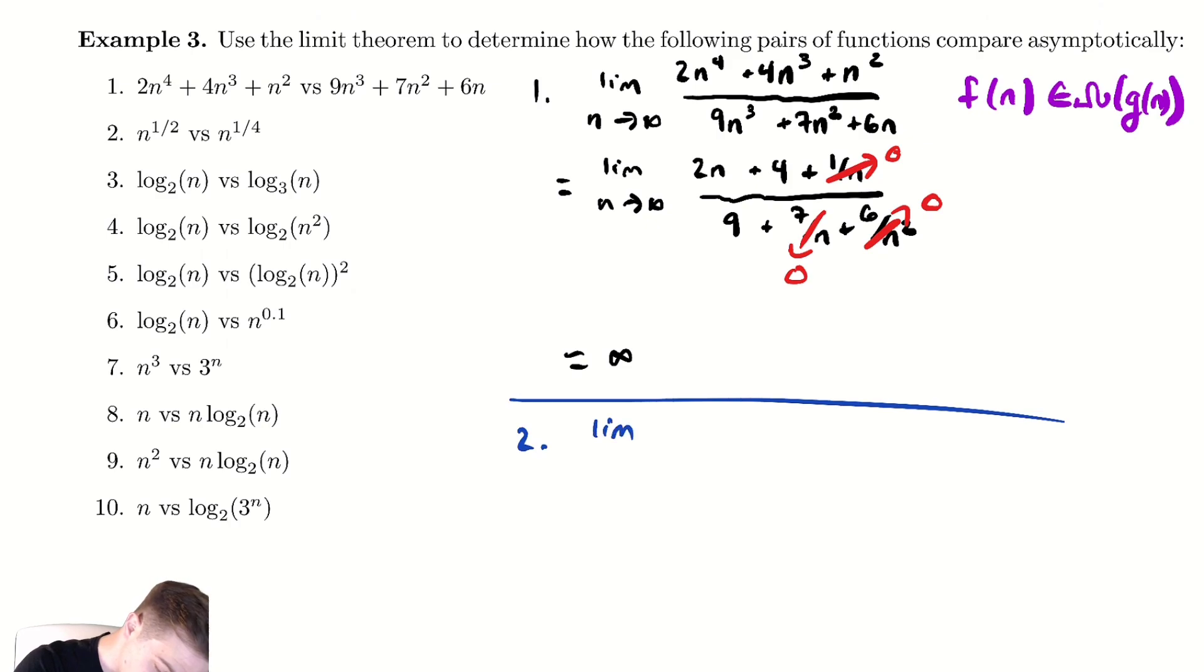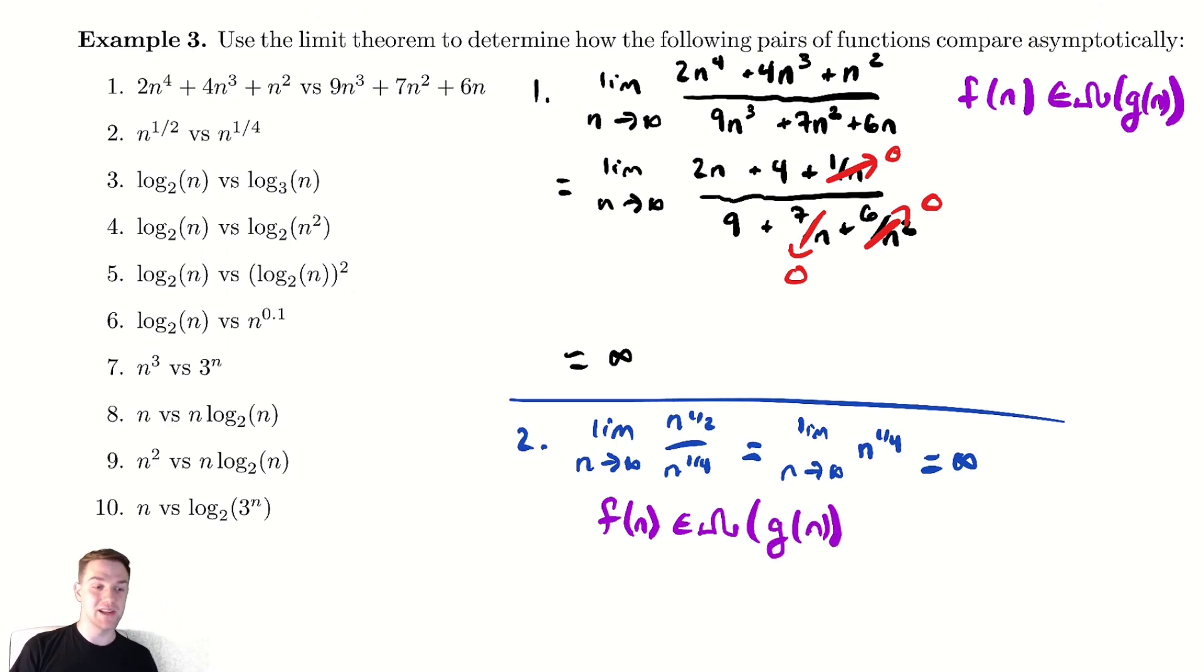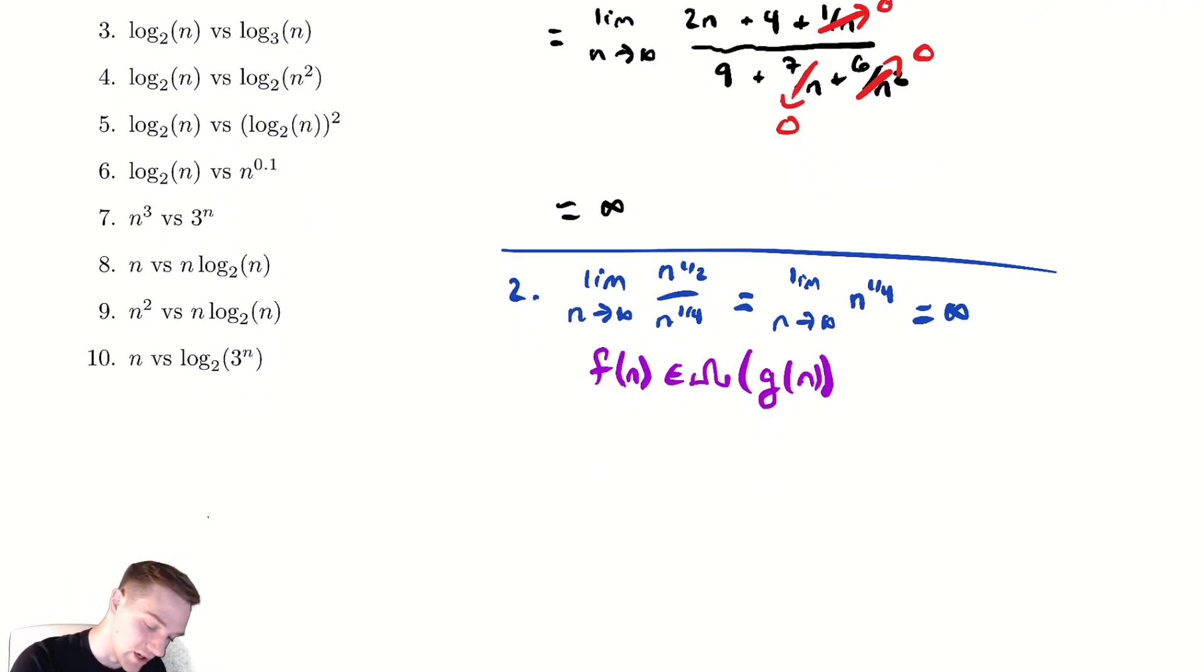For 2 we have the limit as n goes to infinity of n to the one-half over n to the one-fourth. This is actually just rules of exponents. When you divide two different powers of the same base so n to the one-half and n to the one-fourth you can just subtract the exponents. Limit as n goes to infinity of n to the one-half minus a fourth which is n to the one-fourth which again equals infinity. So conveniently we also get f of n is in big omega of g of n. That shouldn't be surprising. n to the one-half is the larger exponent than n to the one-fourth and somewhere in our heads we probably have this idea that larger powers of n grow faster. So good intuition to have.